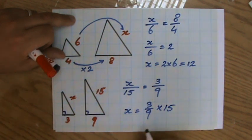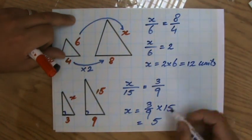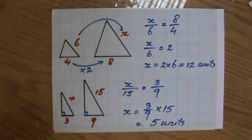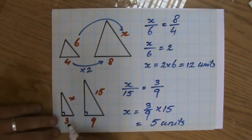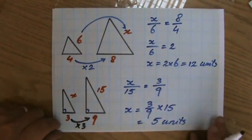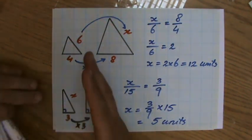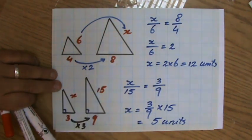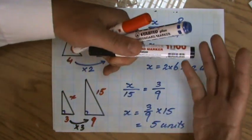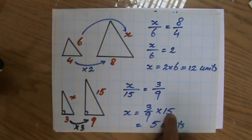So X is going to be 3 over 9, which is 1 over 3, times 15. 1 over 3 times 15 is 5 units. The scale factor is 3 - that's correct if you go from the smaller triangle to the bigger triangle. But do not do 15 times 3, that's 45, which doesn't make sense because X is to be smaller than 15. I'm going from big to small, so I have to divide by the scale factor: 15 divided by 3, which is the same as 15 times 1 over 3.